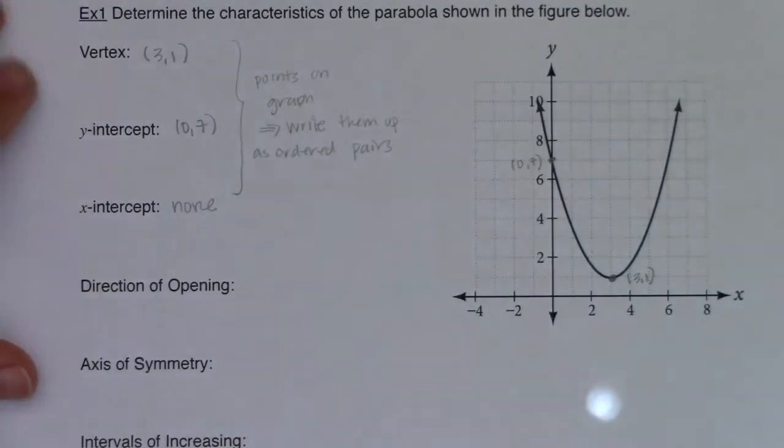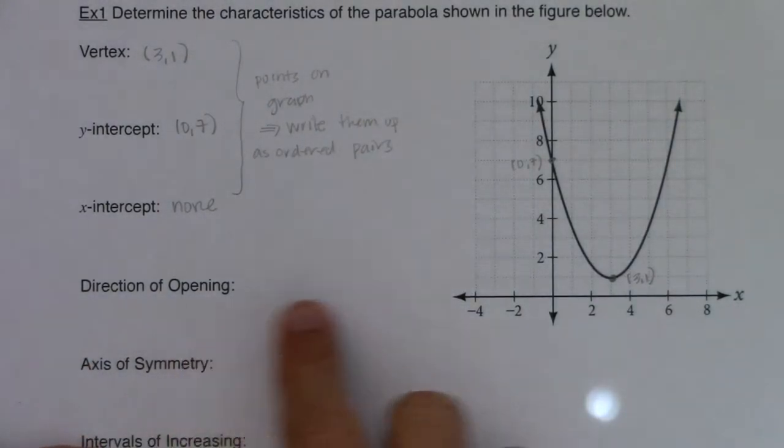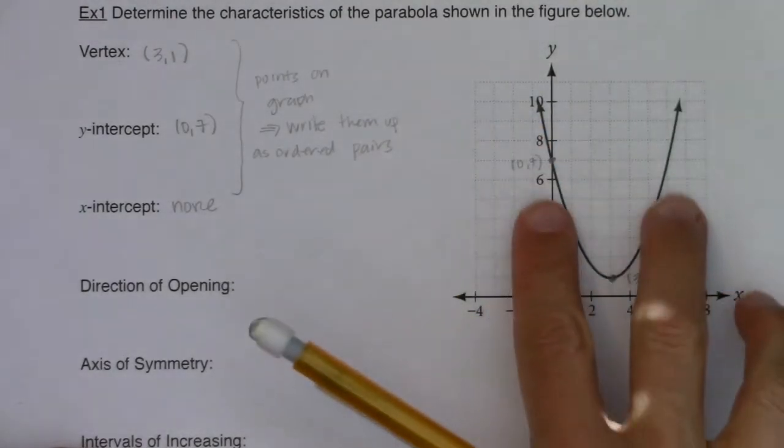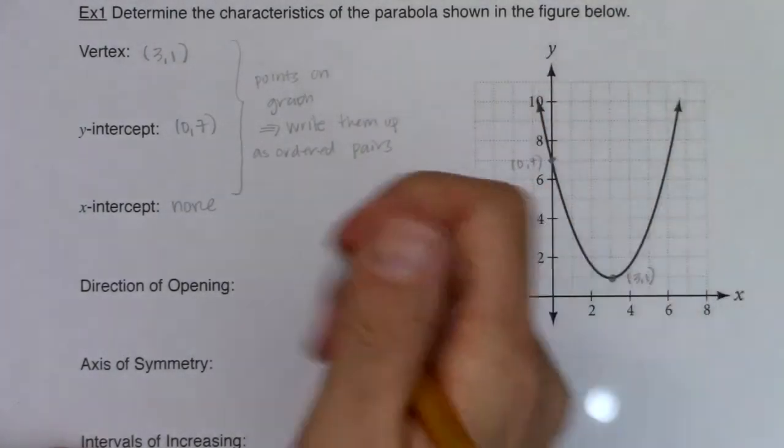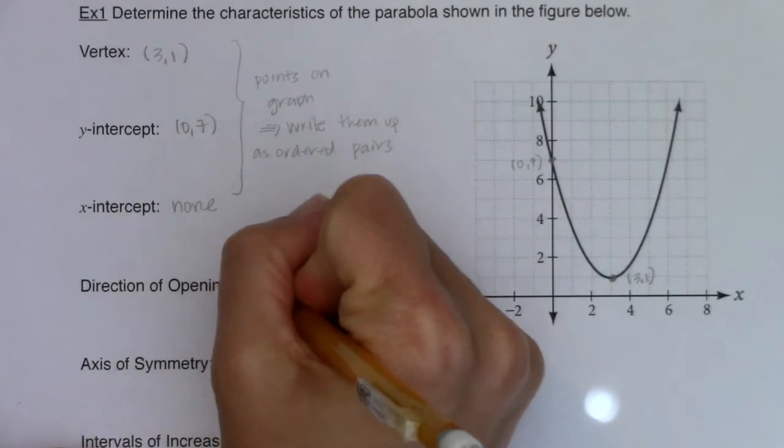Now we're going to take a look at the direction of the opening. This is just either an up or a down, and you can see this parabola is heading up. The left and right end are both headed up, so I'm just going to write the word up here.